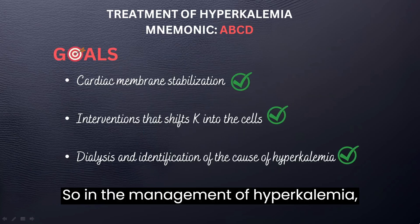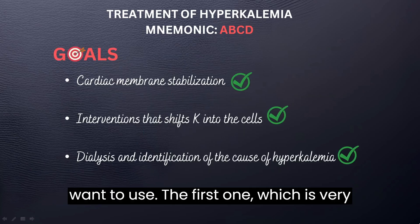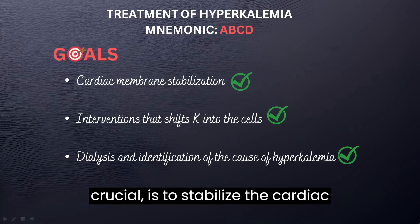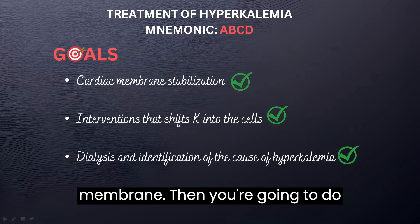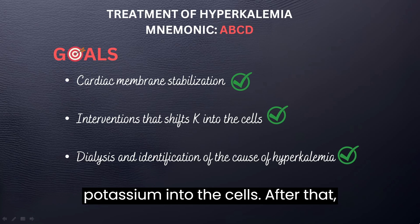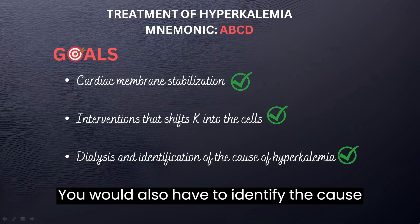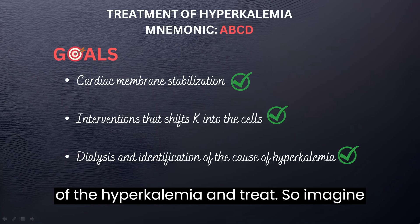In the management of hyperkalemia, there are three important strategies you want to use. The first one, which is very crucial, is to stabilize the cardiac membrane. Then you're going to do interventions that will shift the potassium into the cells. After that, that is going to be followed by dialysis. You would also have to identify the cause of the hyperkalemia and treat.